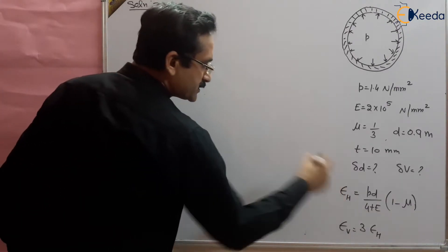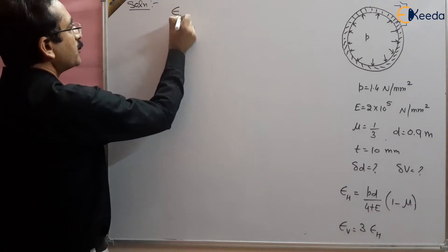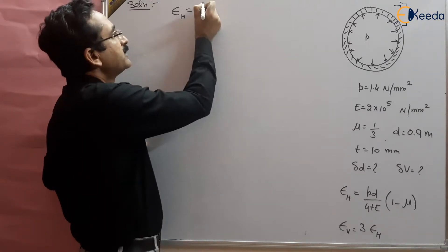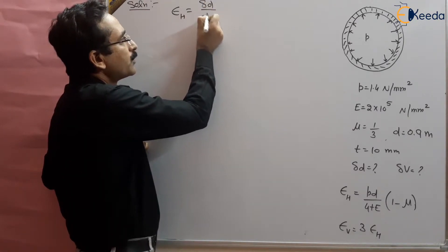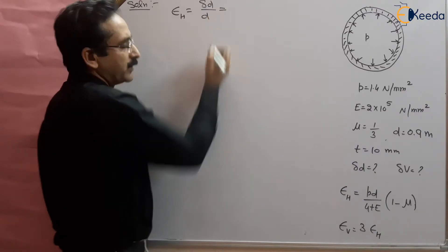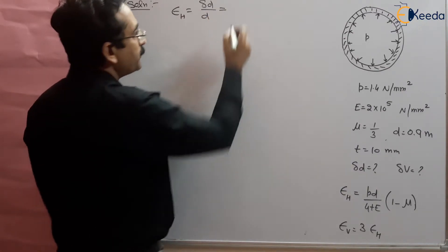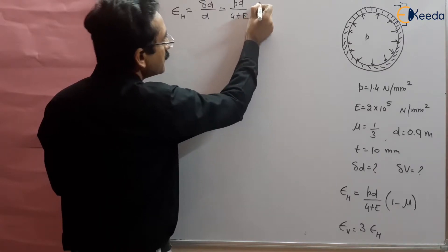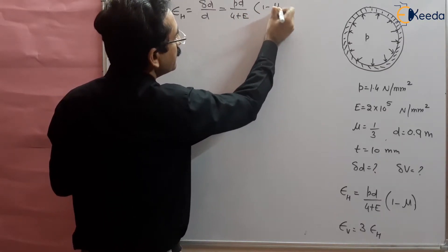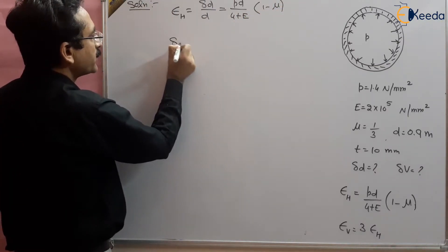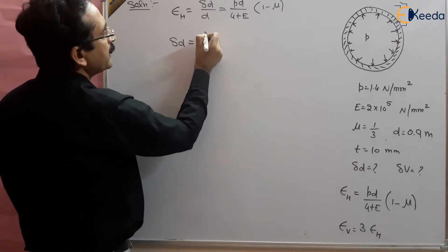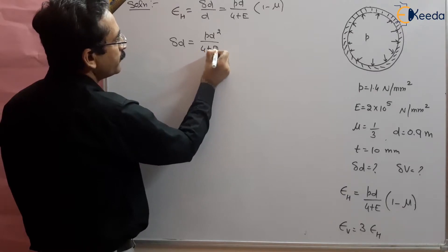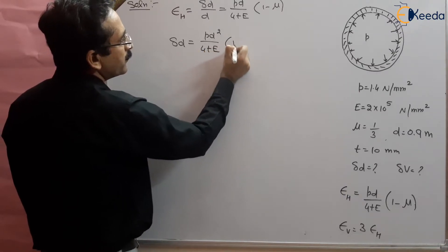Hoop strain is given by change in diameter upon original diameter, and that is equal to Pd / (4tE) × (1 − μ). From here we can find out the change in diameter, which equals Pd² / (4tE) × (1 − μ).